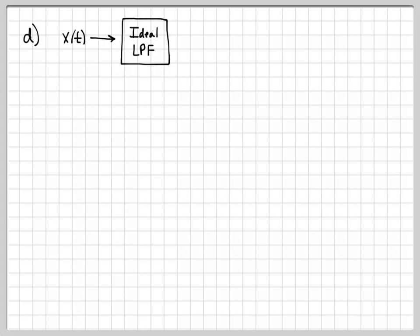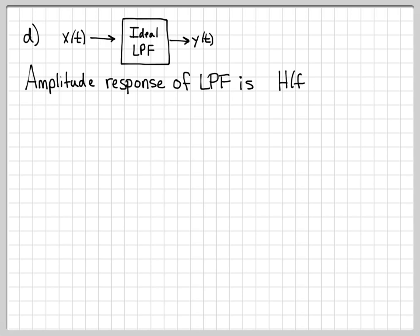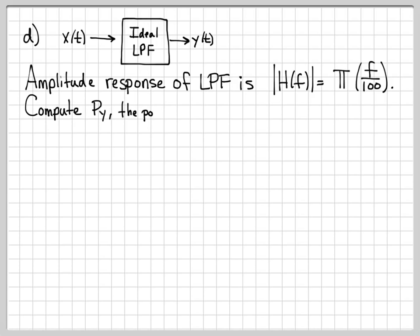Finally, in part D, we are going to pass x(t) through an ideal low-pass filter, and the output is a signal we call y(t). We've taken our power signal, which has a known power spectral density and known autocorrelation function, and we pass it through an ideal low-pass filter whose amplitude response is a rectangle function centered at 0 with a total width of 100. We want to compute Py, the power of y(t). We already know the input power is 200. If this ideal low-pass filter eliminates any frequency components, the output power will be less than the input power.